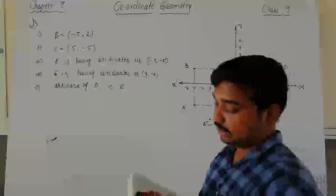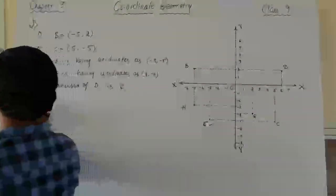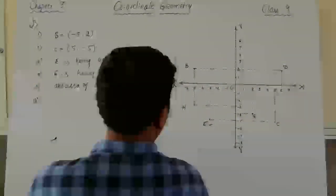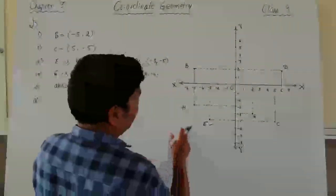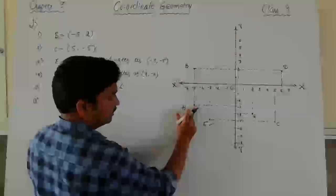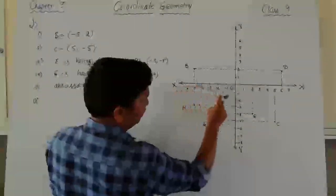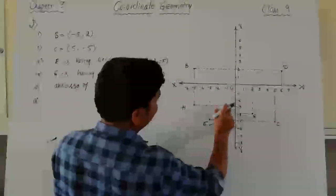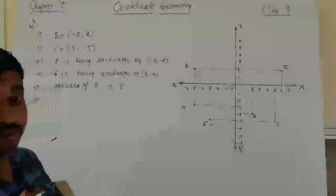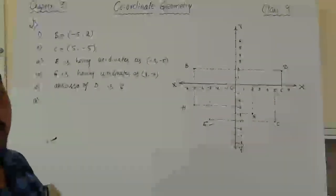The sixth part asks for the ordinate of point H. The coordinates of H are minus 5 comma minus 3. The ordinate is the y-coordinate, which is minus 3. So the ordinate of H is minus 3.